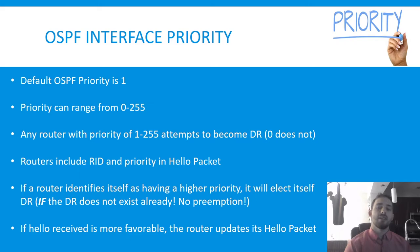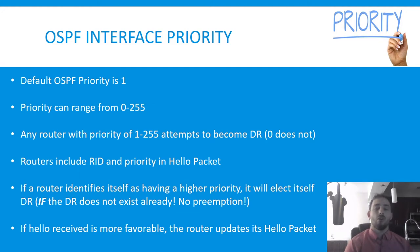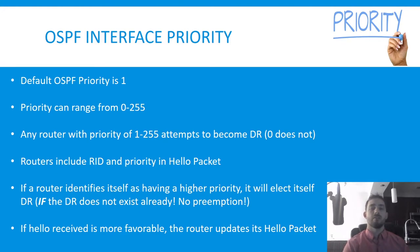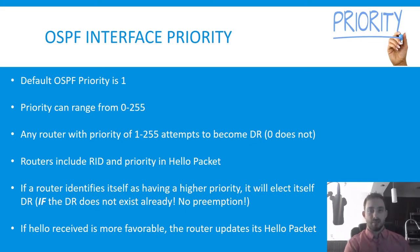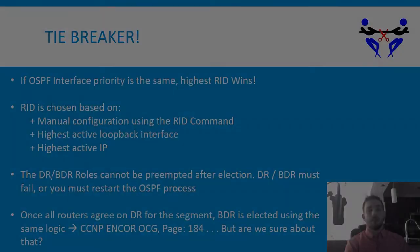Routers include their priority in the hello packet. If a router identifies itself as having a higher priority, it will elect itself as the DR or BDR — but only if there is no current DR or BDR for the segment. There is no preemption in this election process. The highest priority wins, but depending on when routers come online, the router with the highest priority may not necessarily be the DR. Once a DR and BDR are elected, they stay in their role until the OSPF process is restarted or the DR or BDR fails.